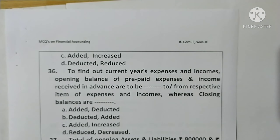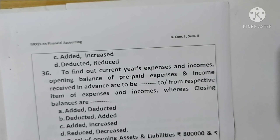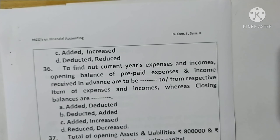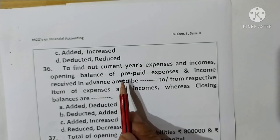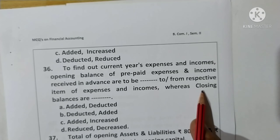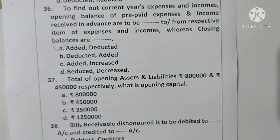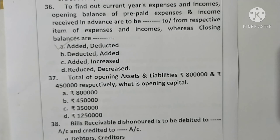Question 36: To find current year's expenses and incomes, opening balances of prepaid expenses and incomes received in advance are to be added, whereas closing balances are to be deducted. Option A is correct. Question 37: Total opening assets are rupees 8 lakhs and total opening liabilities are rupees 4,50,000; opening capital = 8,00,000 − 4,50,000 = rupees 3,50,000. Option C is correct.